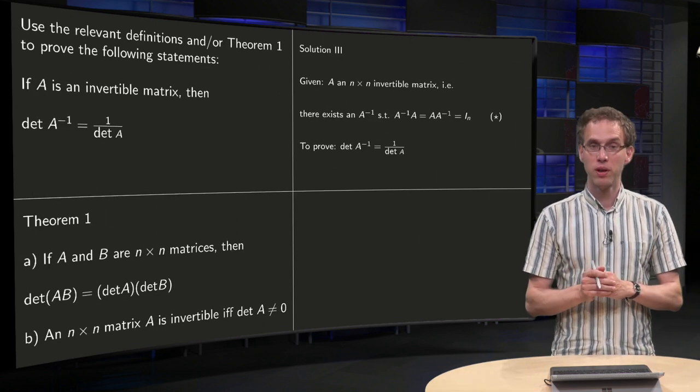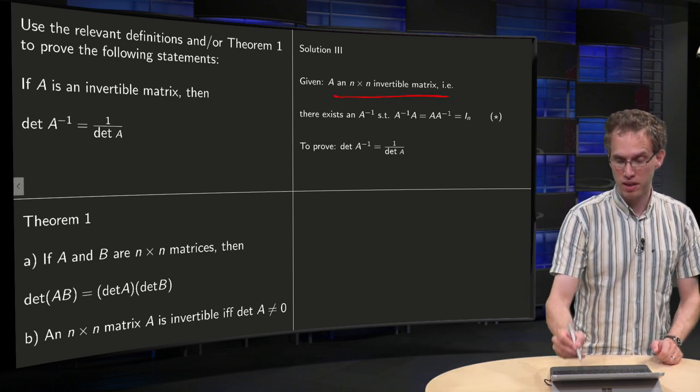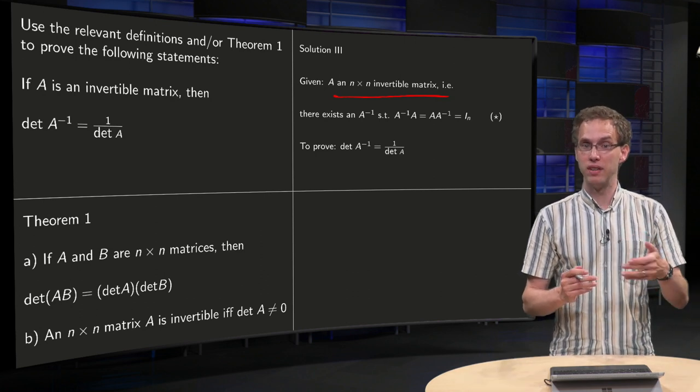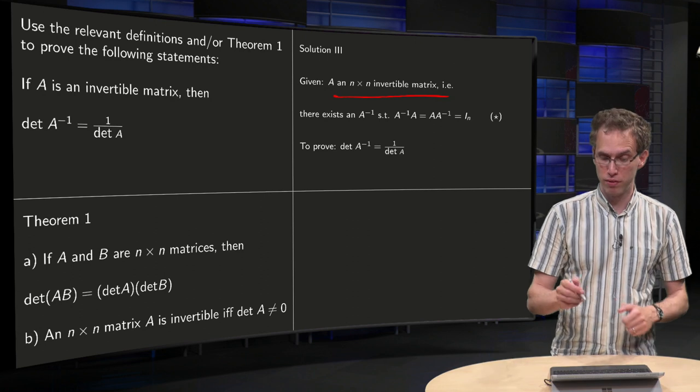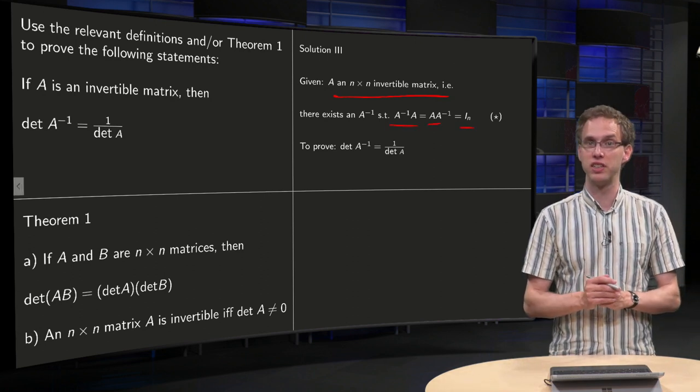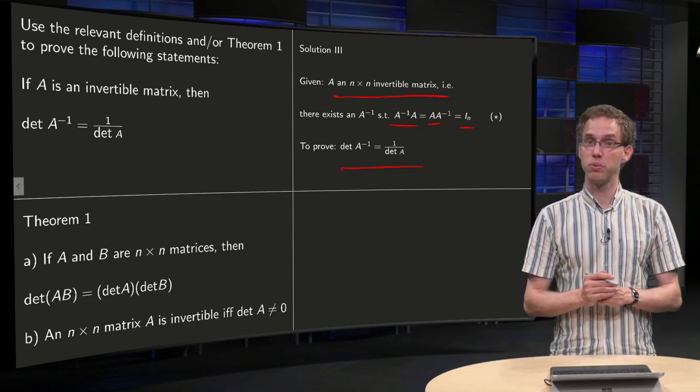Third solution. Well, we use what is given. Given is that A is an n × n invertible matrix. So what does this mean? That you have an A inverse such that A inverse times A equals A times A inverse equals the identity matrix. And just repeat what we had to prove: det(A inverse) equals 1 over det(A).